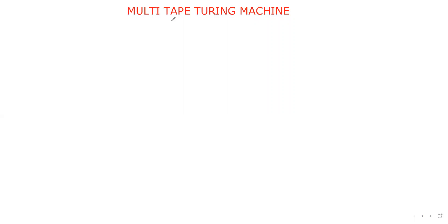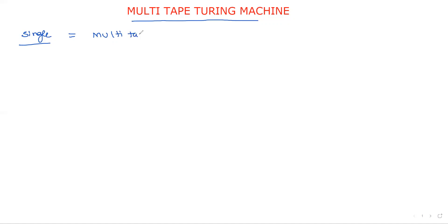Welcome to our channel. In this session we will discuss multi-tape Turing machines. Up to now we have discussed only single-tape Turing machines. A multi-tape Turing machine consists of multiple tapes to store the input. We already discussed in the Church-Turing thesis that single-tape Turing machines have the same power as multi-tape Turing machines.